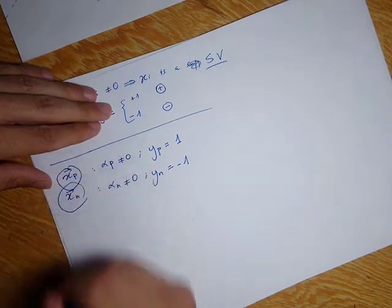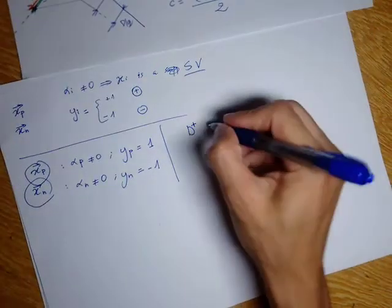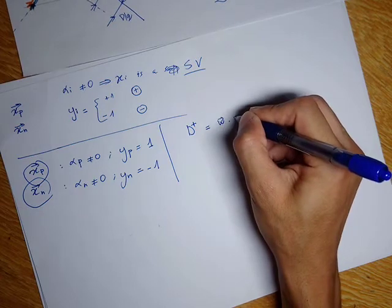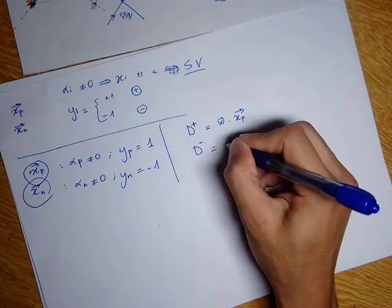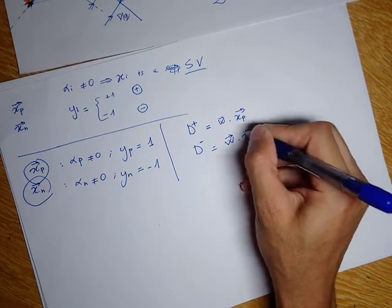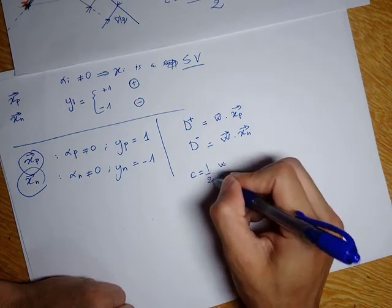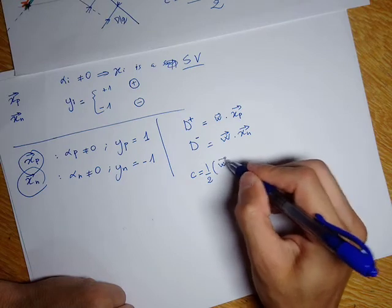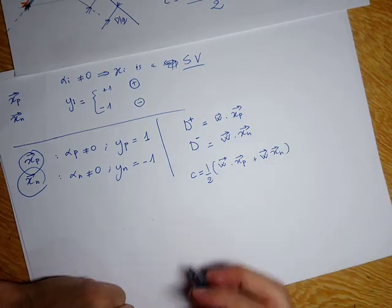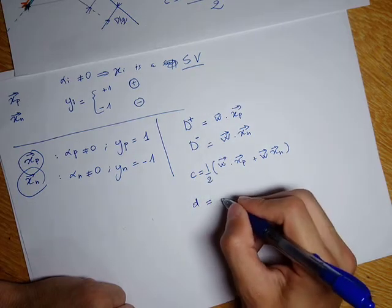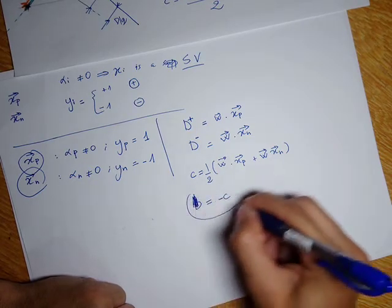This is how I find x_n and x_p. Then, to get d plus, I dot product w with x_p. D minus is the dot product of w with x_n. My c equals one half of (w dotted with x_p plus w dotted with x_n), and then b equals minus c. This is how I get the value of b.